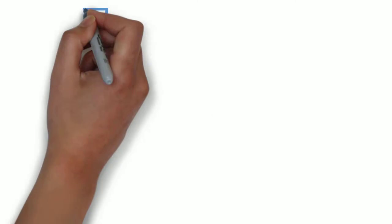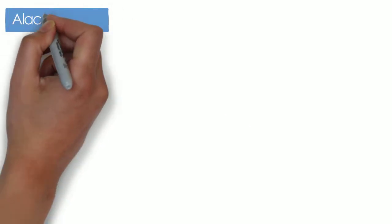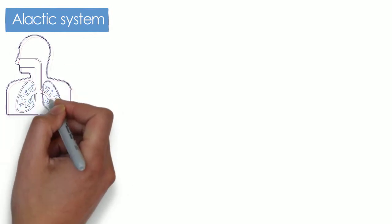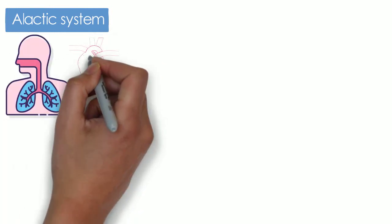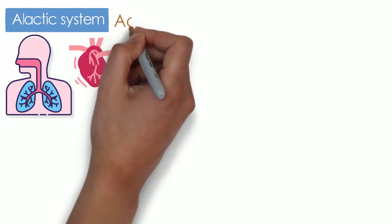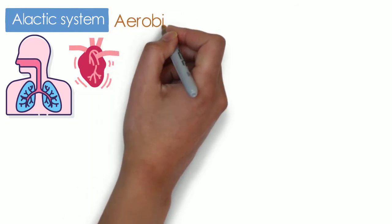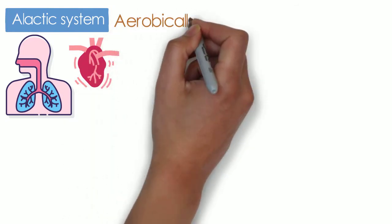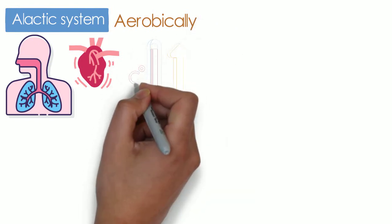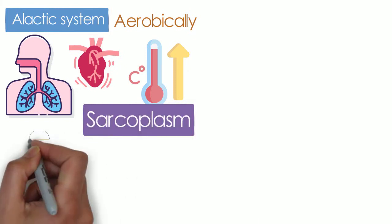ATP-PC System. It is also known as the alactic system. This system is purely anaerobic, as the respiratory and cardiovascular system cannot provide oxygen rapidly for immediate, instantaneous brief exercises or activities. It operates without oxygen, even though it can do so aerobically, and does not give rise to any waste product except heat.